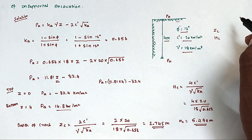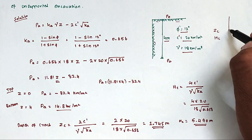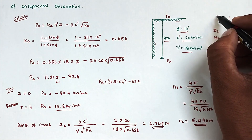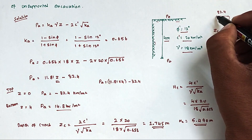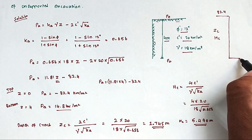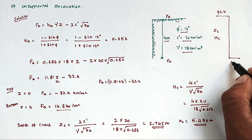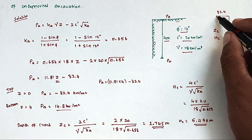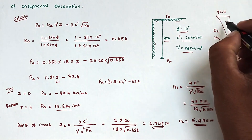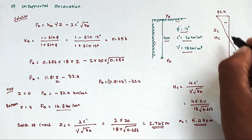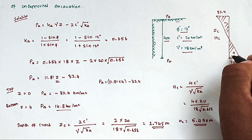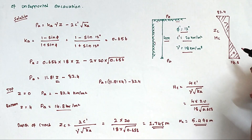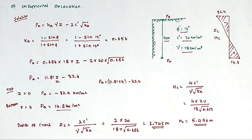Now we draw the stress distribution diagram for the cut. At the top, the stress is −32.4 kN/m², which is on the negative side. At the bottom, the stress is +14.8 kN/m², which is positive. This is the stress distribution diagram for the cut. This is the method to solve this problem. We will see more in the next video. Thank you.